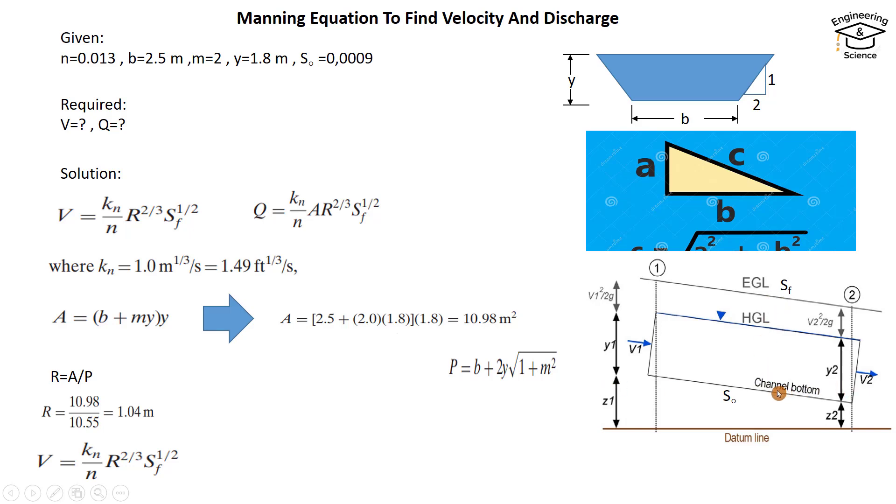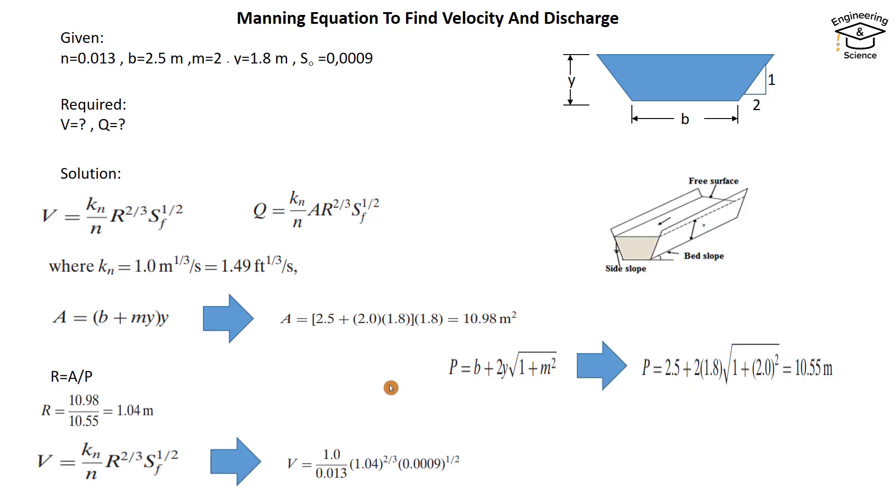So we can replace it with S₀. Here we use S₀ instead of Sf because they are parallel. Just put the values: Kₙ = 1 because we use SI units, n = 0.013, R = 1.04 to the power 2/3, multiplied by S₀ = 0.0009 square rooted.